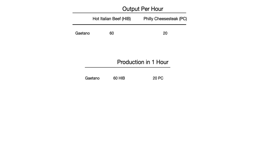What we want to be able to do is calculate the opportunity cost of production for Gaetano. We can just look at his production in one hour: Gaetano can produce 60 hot Italian beef sandwiches and 20 Philly cheesesteak sandwiches.